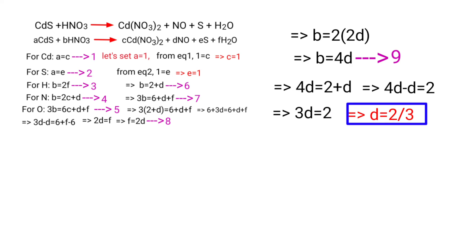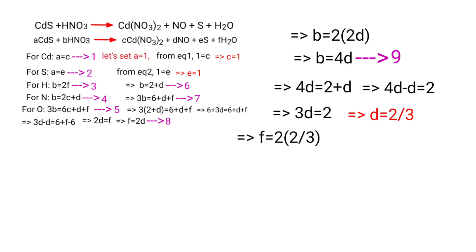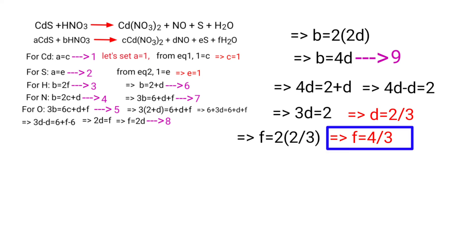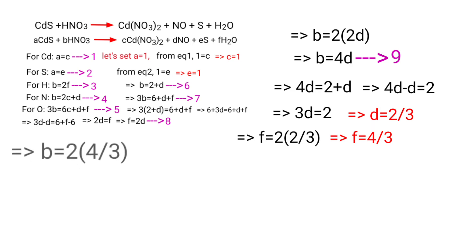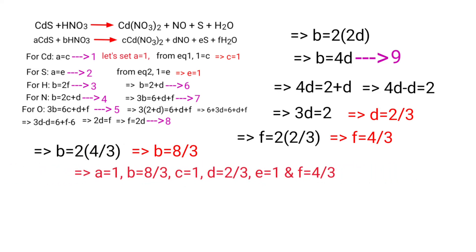Applying the value of D: F = 2·(2/3) = 4/3. Then B = 2·(4/3) = 8/3. So our values are: A = 1, B = 8/3, C = 1, D = 2/3, E = 1, and F = 4/3.